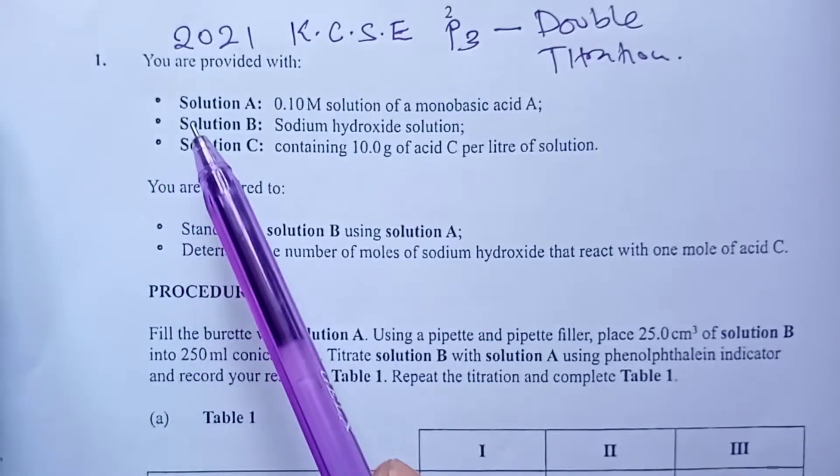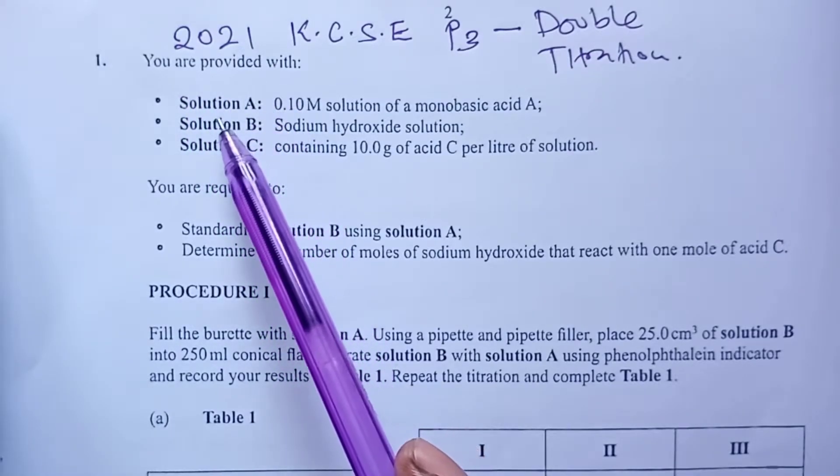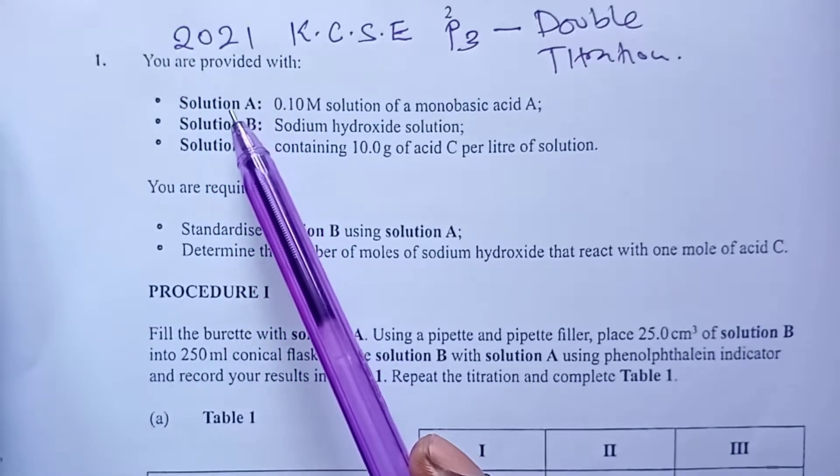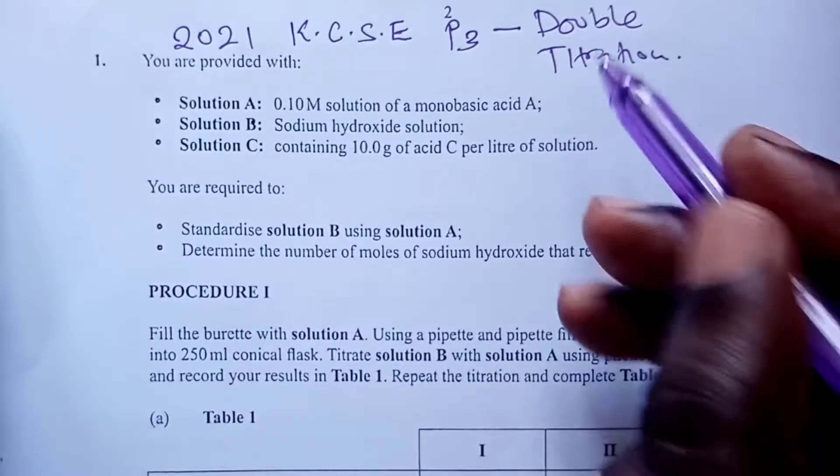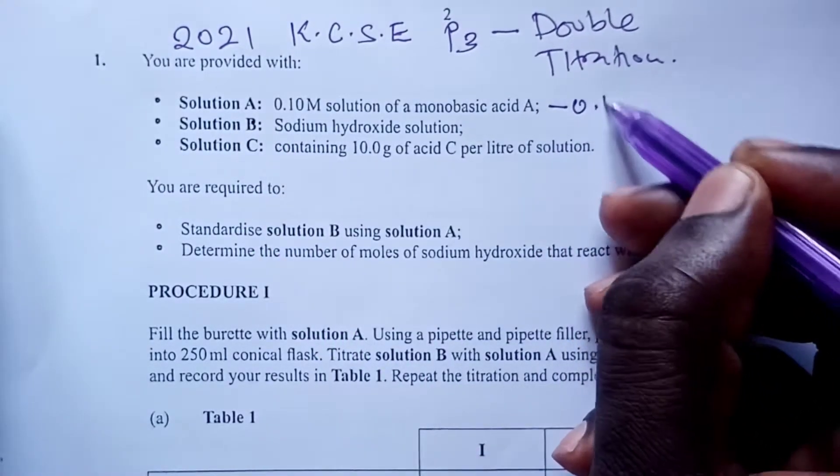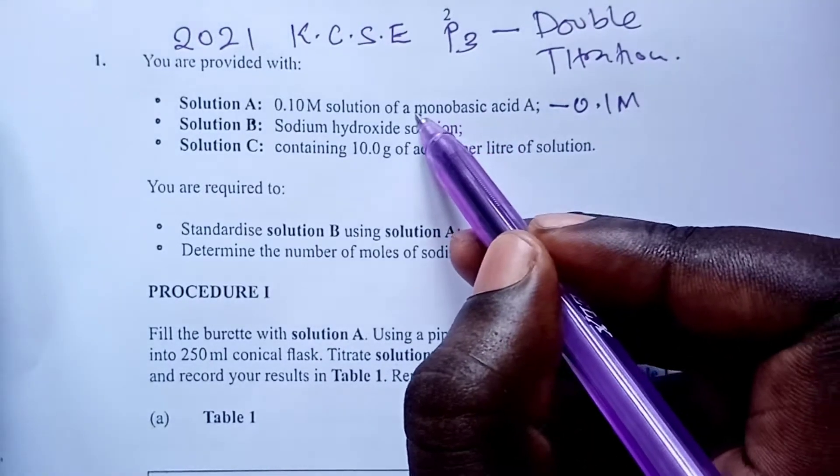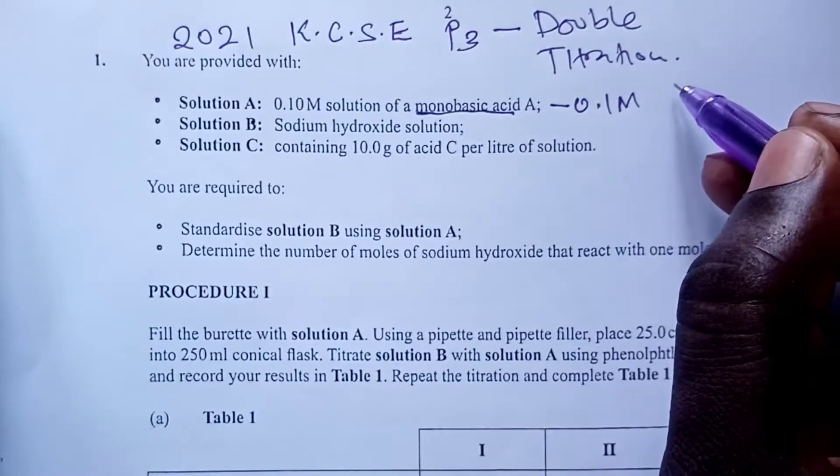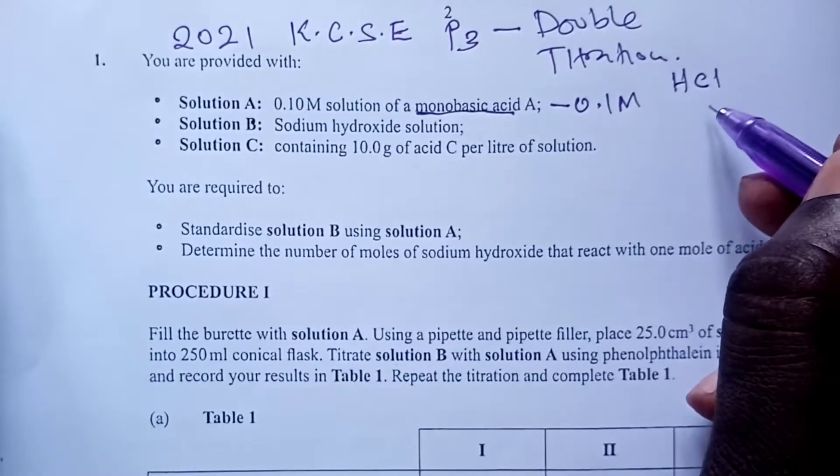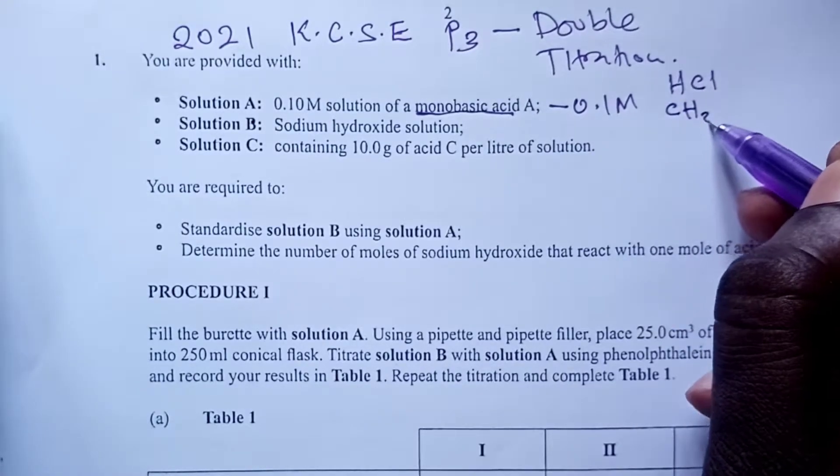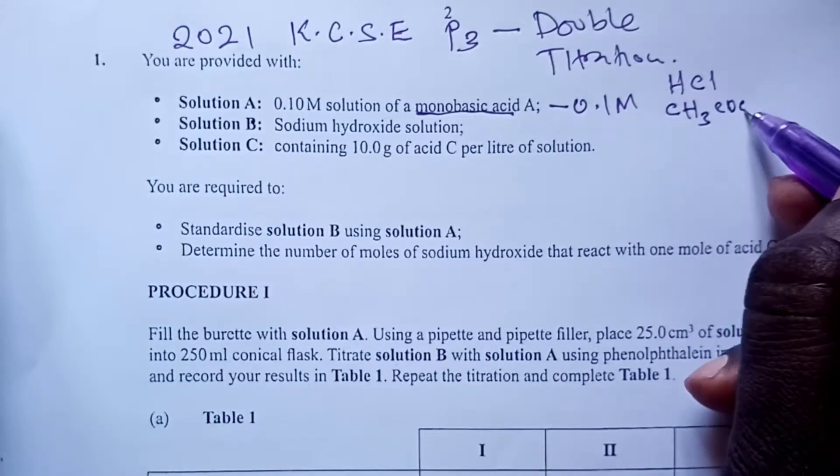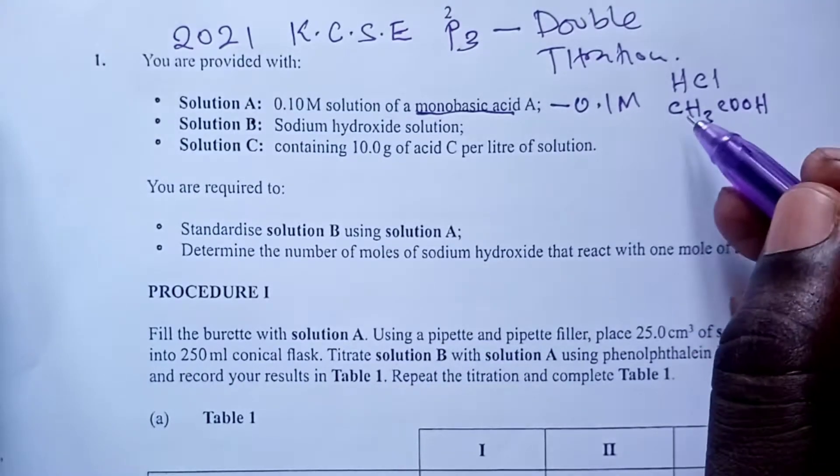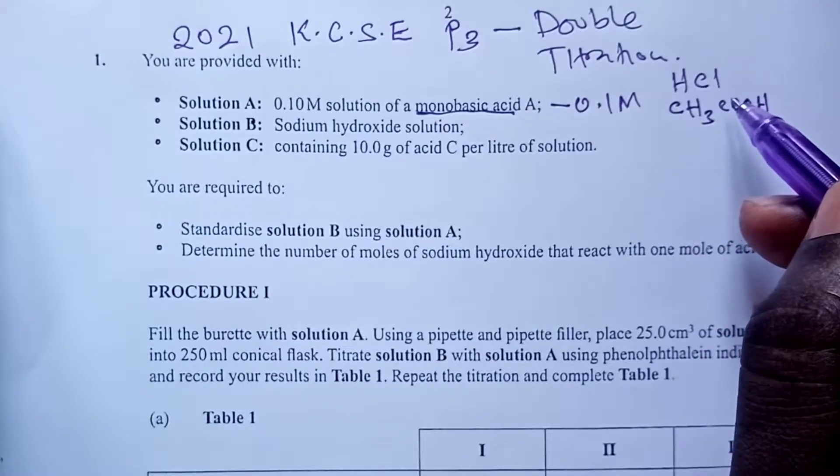And the question read, you are provided with three solutions here. Solution A is 0.1 molar solution of monobasic acid. A monobasic acid is one that has one replaceable hydrogen atom. For example, HCl, we also have ethanoic acid being monobasic. But because here we do not know what was there, we shall generally write it as HA to mean there is one replaceable hydrogen atom in the acid.